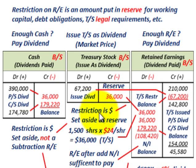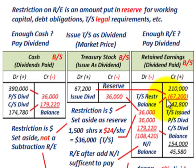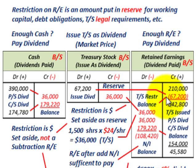The restriction means a dollar amount is set aside as a reserve. It's not a permanent subtraction from retained earnings — think of it like a savings account set aside for that treasury stock. So we're sitting with retained earnings of $142,800 available. We need to confirm we have enough retained earnings to pay dividends and enough cash. These are the two key questions when dealing with cash dividends and treasury stock dividends.